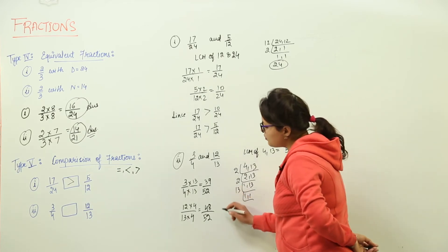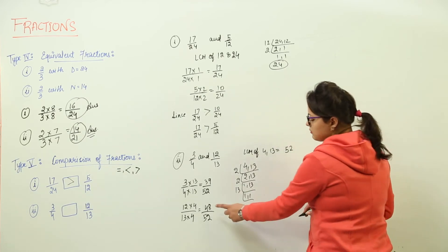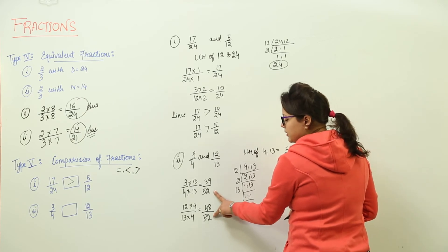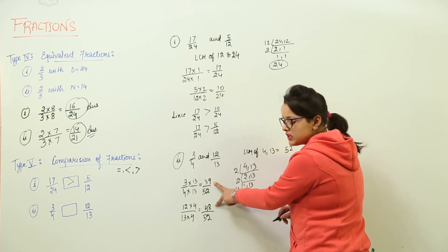Now identifying which one out of both is greater. We know that 48 upon 52 is definitely greater. Because the denominators are the same, we are only comparing the numerators.